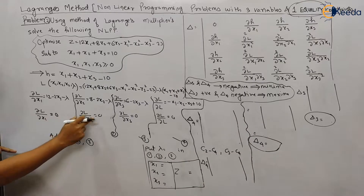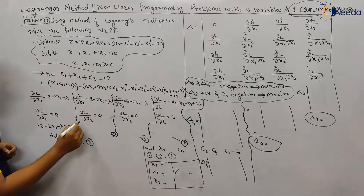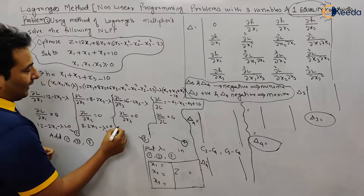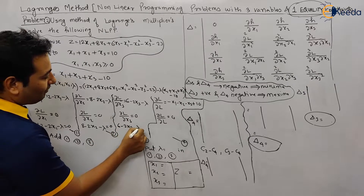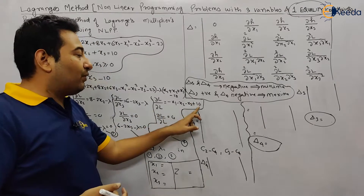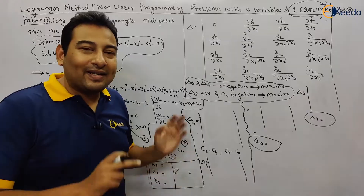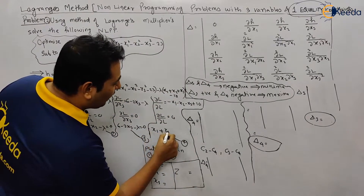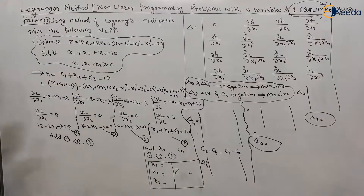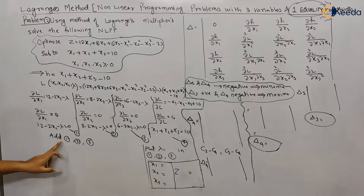Setting each partial derivative to zero: Equation 1: 12 minus 2x1 minus lambda = 0. Equation 2: 8 minus 2x2 minus lambda = 0. Equation 3: 6 minus 2x3 minus lambda = 0. Equation 4 (from ∂L/∂λ = 0, multiplying through by minus one): x1 plus x2 plus x3 = 10.